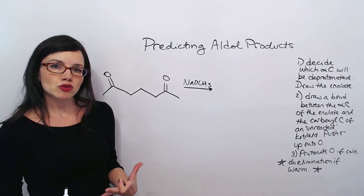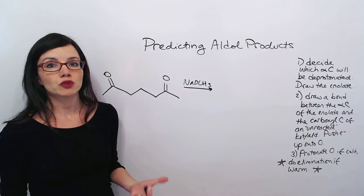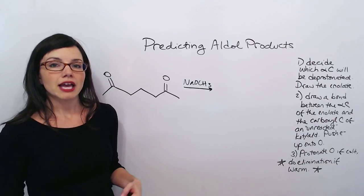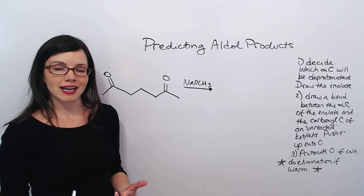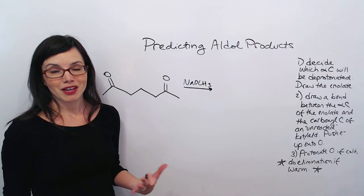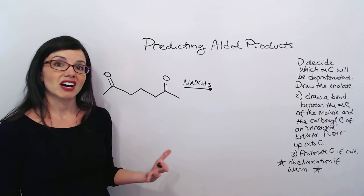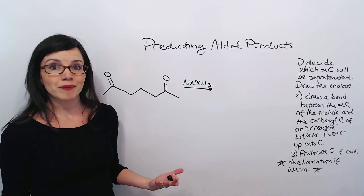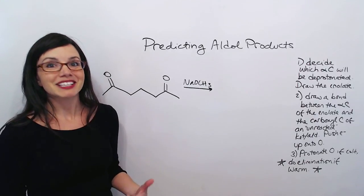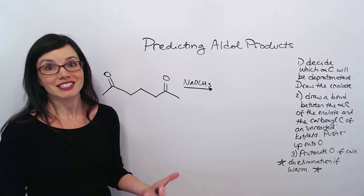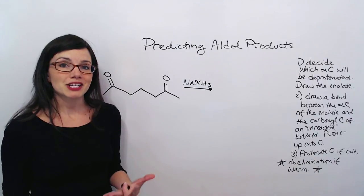But when you have an intramolecular aldol, you're going to form a ring structure. And you need to think about what size that ring structure is going to make. Is it going to make a three or four-membered ring? Is it going to make a five or six or seven-membered ring? Because thermodynamically, it really matters for the success of the reaction. What size ring we're going to make.